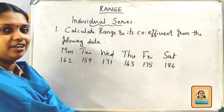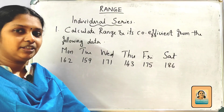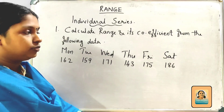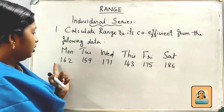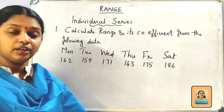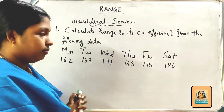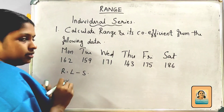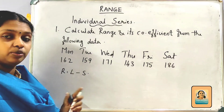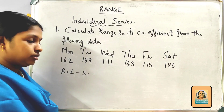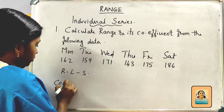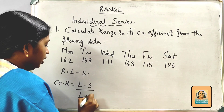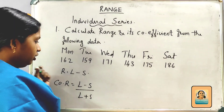The first question is Range — this is the individual series. Calculate Range and its Coefficient from the following data. We have days, then we have values. What is Range? The equation: R is equal to L minus S. Coefficient of Range is equal to L minus S divided by L plus S. This is our equation.